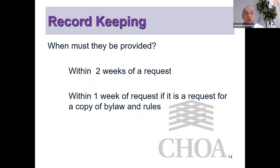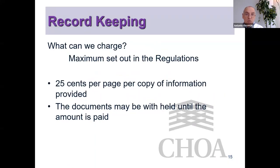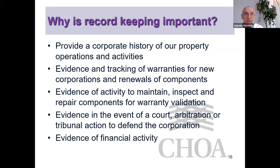Records must be provided within two weeks of a request. Note that this is different from a Form B or Form F — the information in a Form B is not the same as the list of records under Section 35. If there is a request for a copy of bylaws and rules, the strata must provide that within one week. Generally, records and documents under Section 35 must be provided within two weeks. You can charge 25 cents per page for copies, and documents may be held until the amount is paid.